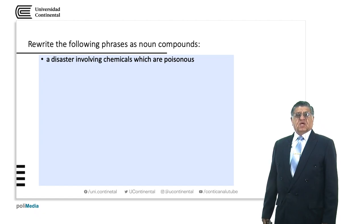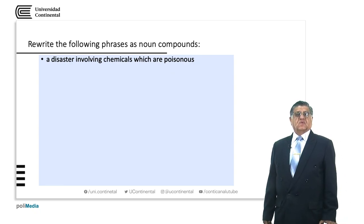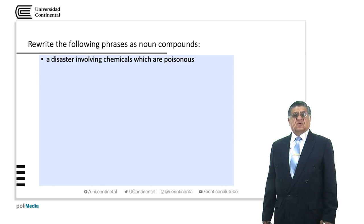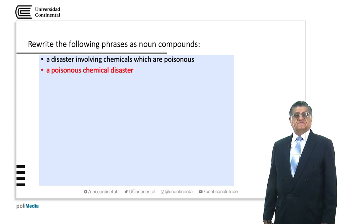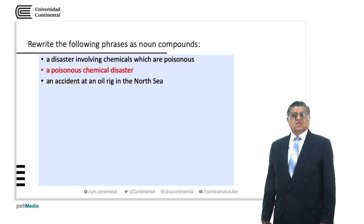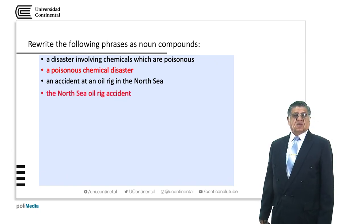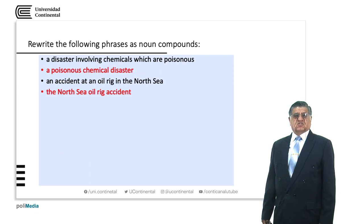A disaster involving chemicals which are poisonous — what are we talking about here? About poisonous chemicals or a disaster? We are talking about a disaster. So: 'a poisonous chemical disaster'. Again, the main word is 'disaster'. An accident at an oil rig in the North Sea — again, we are talking about the accident, not about the oil rig or the North Sea. So: 'the North Sea oil rig accident'. Rig is a kind of platform.